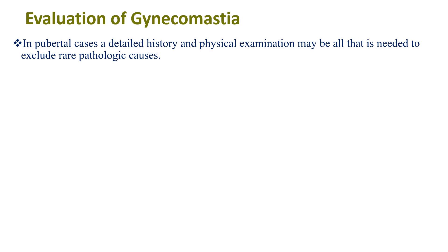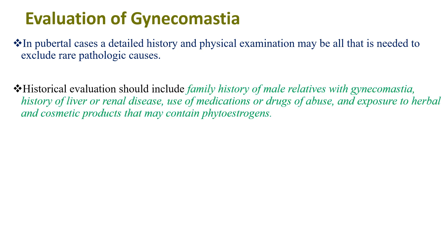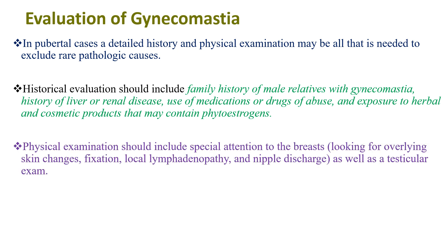For evaluation of gynecomastia, in pubertal cases, a detailed history and physical examination may be all that is needed to exclude rare pathologic causes. Historical evaluation should include family history of male relatives with gynecomastia, history of liver or renal disease, use of medications or drugs of abuse, and exposure to herbal and cosmetic products that may contain phytoestrogens. Physical examination should focus on the breast, looking for overlying skin changes, fixation, local lymphadenopathy, nipple discharge, and testicular exam.